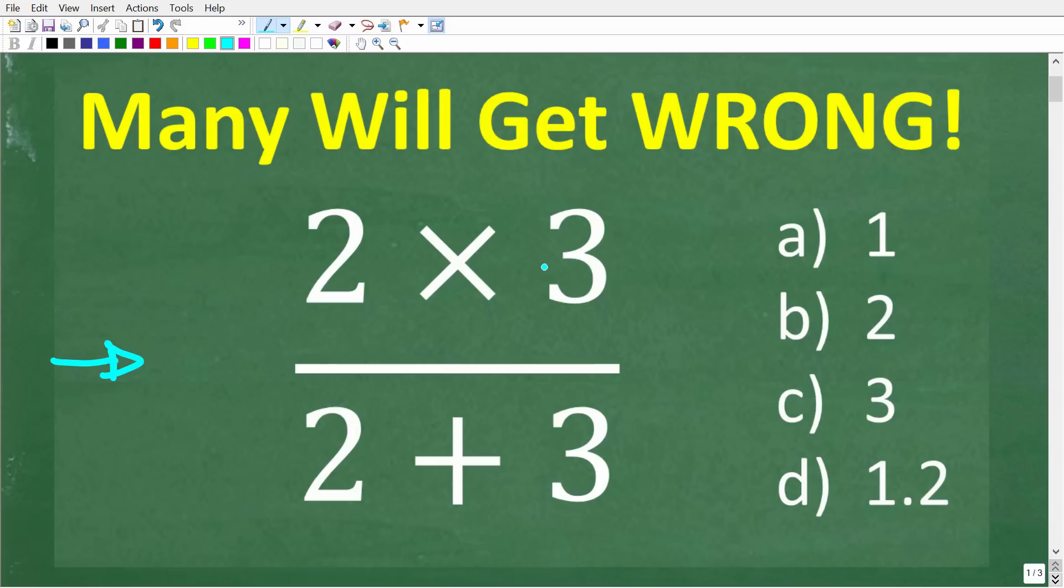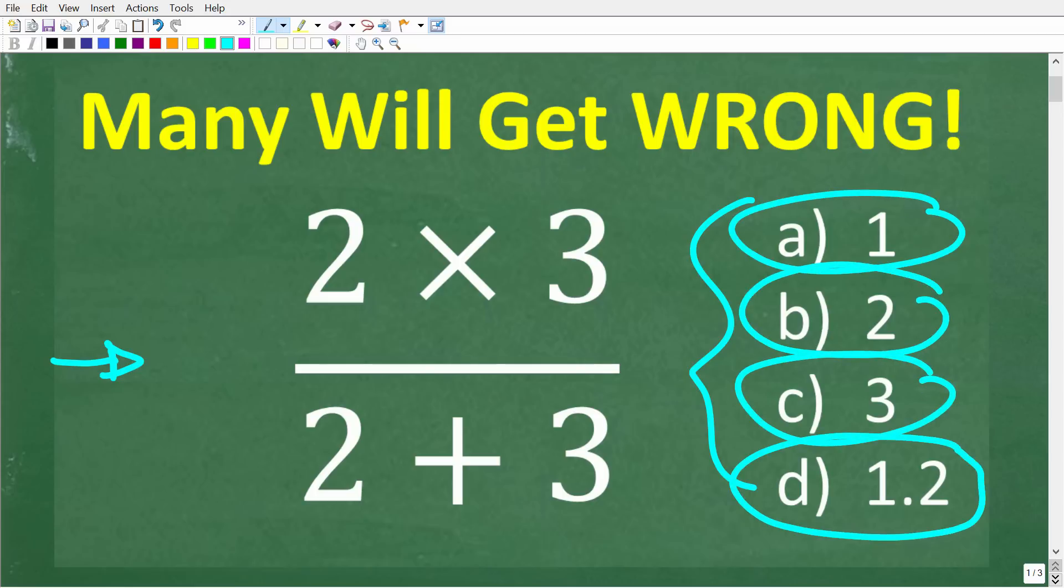So we have 2 times 3 over 2 plus 3 and this is a multiple choice question and our answers are A 1, B 2, C 3, and D 1.2.